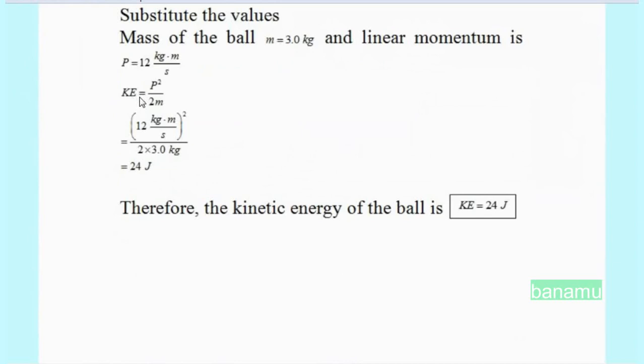KE equals p squared by 2m, equals 12 kg·m per second whole squared by 2 into 3 kg, equals 24 joules.